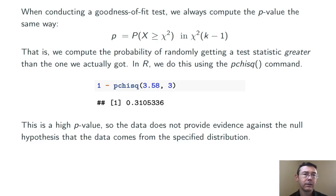In order to get greater than, we need to subtract from 1. So the command we're needing is 1 minus pchisq of 3.58, that's the chi-squared that we got, comma 3. So 3 is the number of degrees of freedom here. In this case, the result is about 0.31.